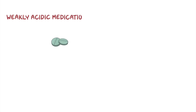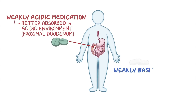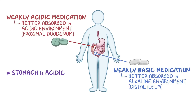In other words, weakly acidic medications will be better absorbed in an acidic environment, like the proximal duodenum, in contrast to weakly basic medications, which are more likely to get absorbed in an alkaline environment, like the distal ileum of the small intestine. Note that even though the stomach is acidic, it's not suitable for the absorption of even weak acids, mainly because of its thick mucus layer.